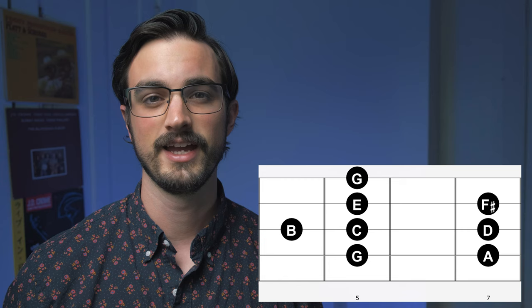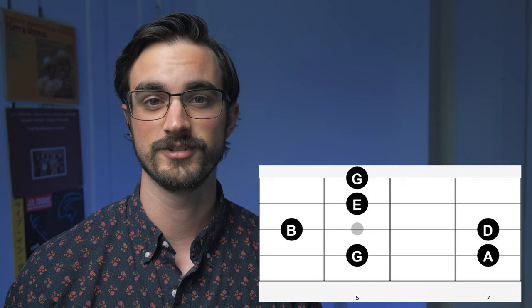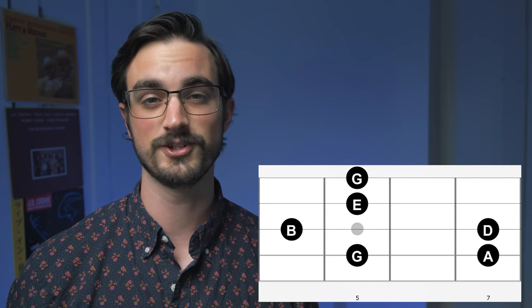Anyway, what are major pentatonic scales? Well, first let's think about the major scale. In this case, we'll think about the G major scale. If we take out the fourth and seventh note from the G major scale, then we'll have five notes: G, A, B, D, and E. That's the G major pentatonic scale.